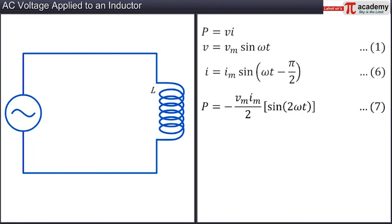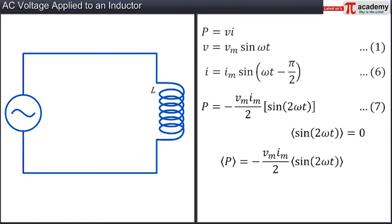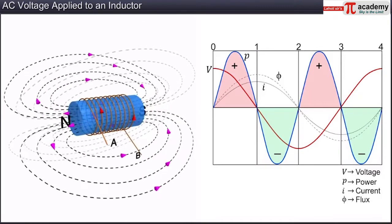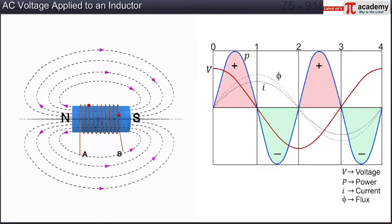This instantaneous power evaluates as a time-dependent harmonic function. As this is a time-dependent sinusoidal function, its average over one complete time period will be zero. The argument of the sine function for voltage is omega t and for power is twice omega t. Hence, the time period for the power function is half the time period for voltage. Since the average value of sin 2 omega t over one complete cycle is zero, the power supplied to an inductor on average in an AC circuit over one complete cycle is zero.